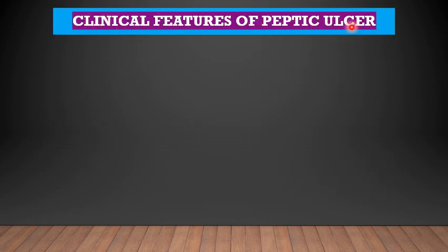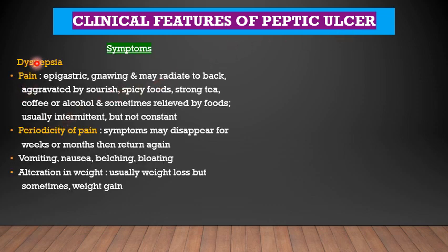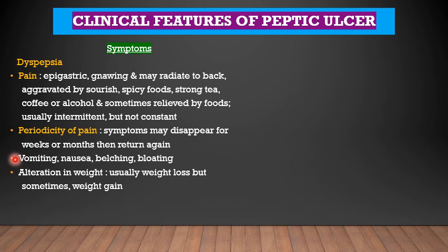We come to the clinical features of peptic ulcer. Symptoms include dyspepsia, indigestion, epigastric discomfort, bloating and burping. Pain is another very important symptom — usually epigastric, gnawing in nature, and may radiate to the back. It is usually aggravated by sour or spicy food, strong tea, coffee or alcohol, and sometimes relieved by certain foods. This pain is usually intermittent and not constant. Periodicity of pain: symptoms may disappear for weeks or months then return again. It is usually associated with vomiting, nausea, belching and bloating.